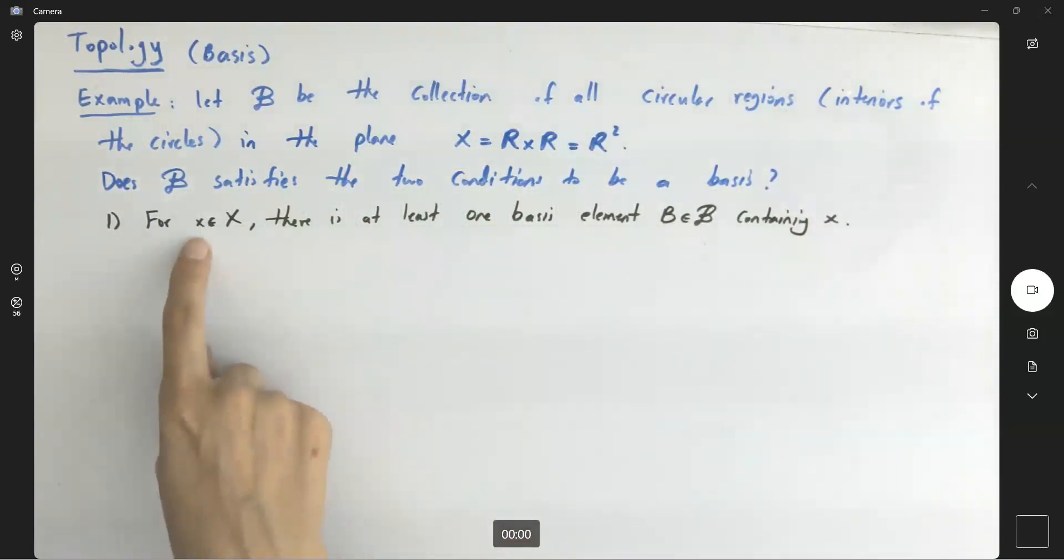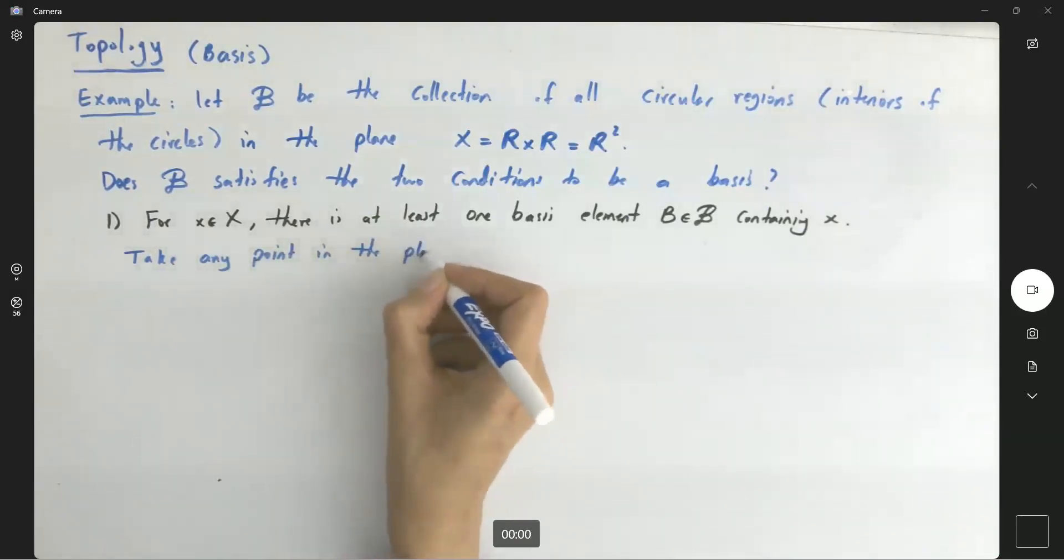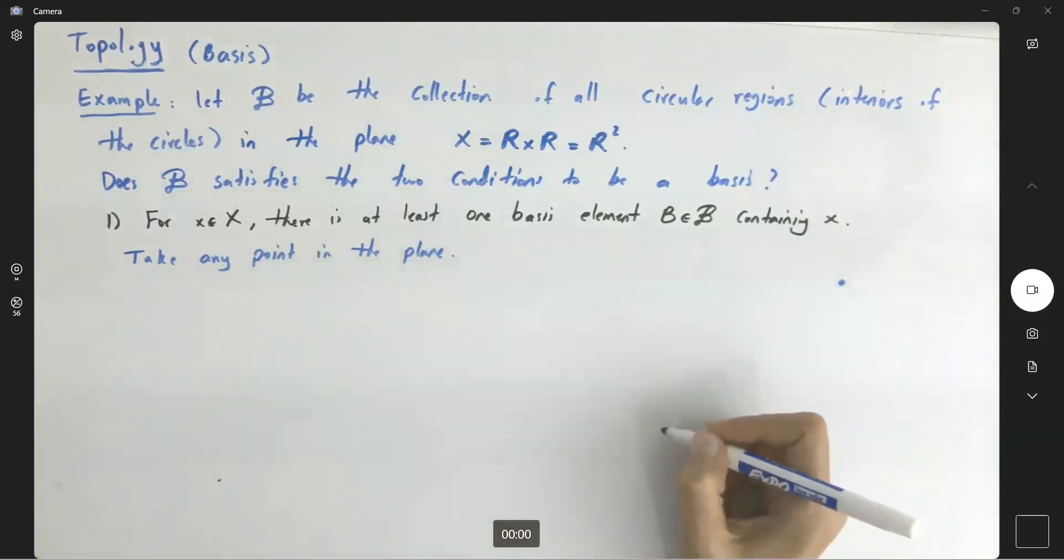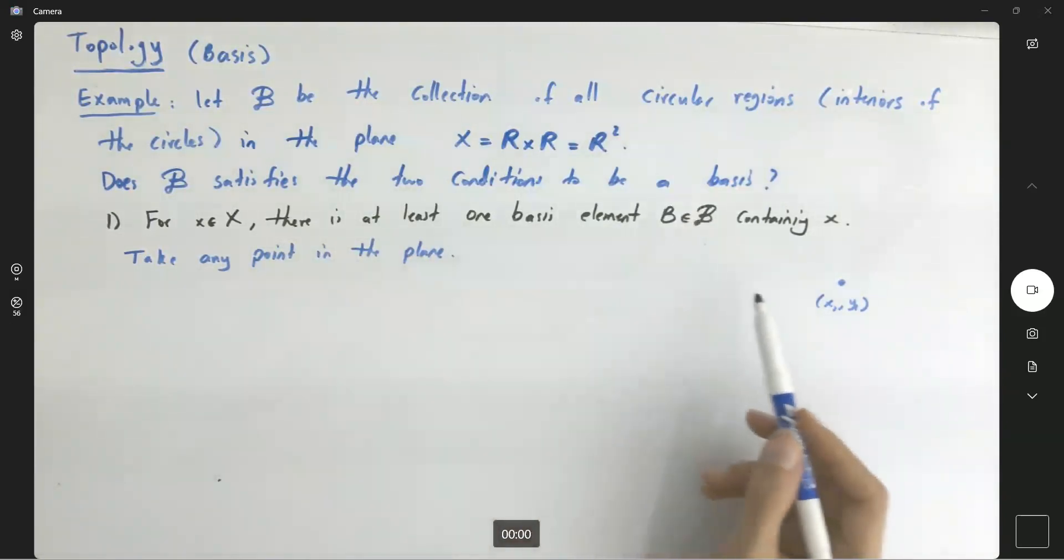Take any point in the plane. Suppose we have a point in the plane, X1, Y1. We can find one circular region, at least one circular region containing that point. That can be the center, in the center of that circular region. That makes sense.